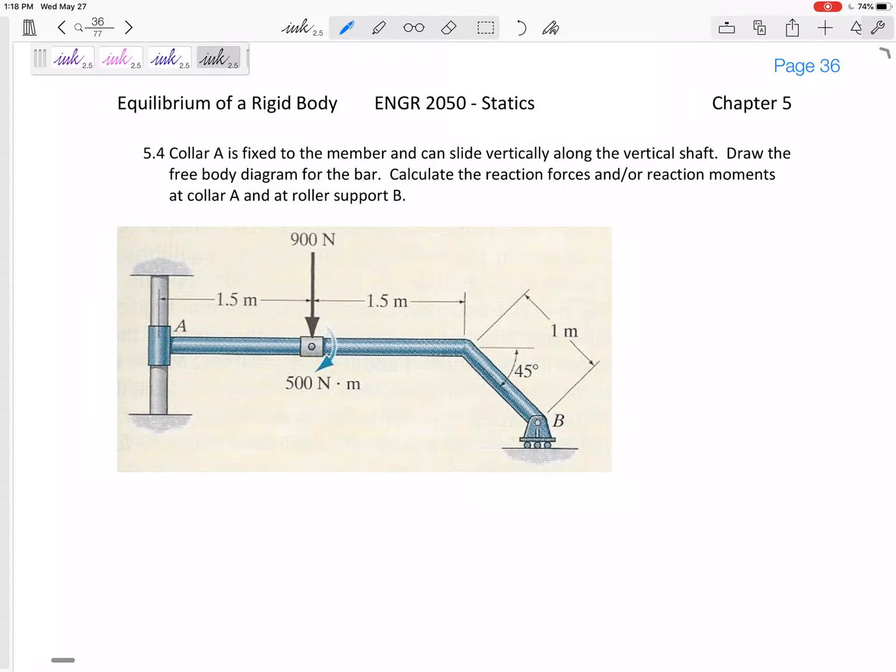All right, how about this one? We've got collar A is a fixed collar. This T right here, this is fixed. There's no pin right there. It's free to slide vertically along the vertical shaft, but not horizontally. Draw the free body diagram for the bar. Calculate the reaction forces and reaction moments at collar A and roller support B.